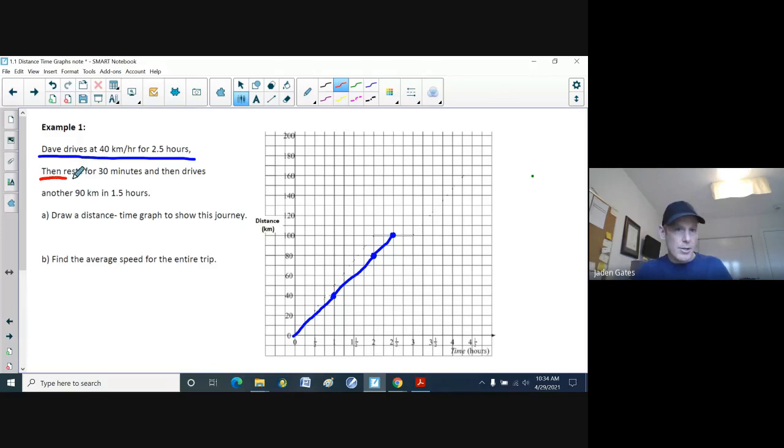Then go to the second part. Then he rests for 30 minutes. Now, if Dave's resting for 30 minutes, that means he has not increased his distance whatsoever. So I'm going to draw a flat line over a half an hour, from two and a half hours to three hours.